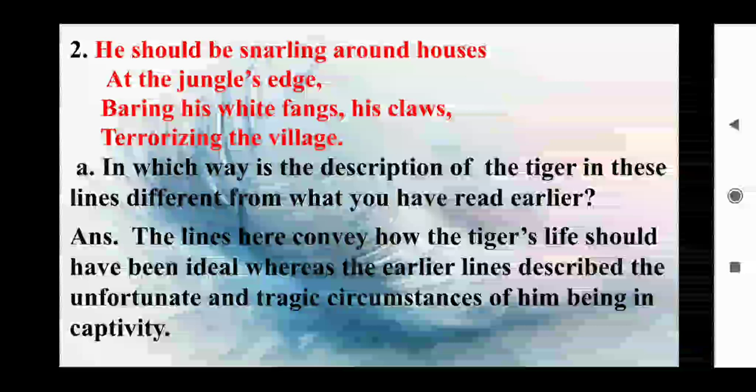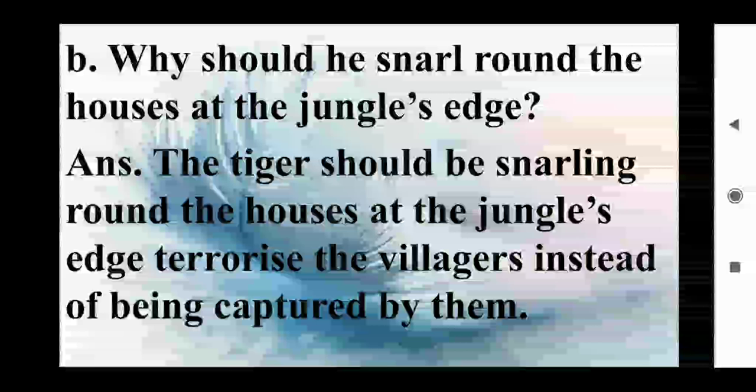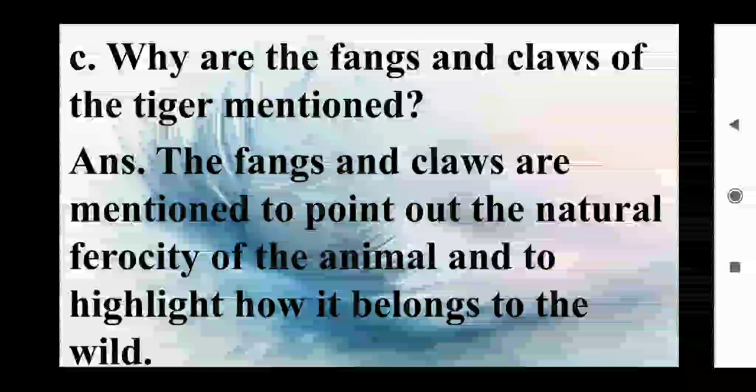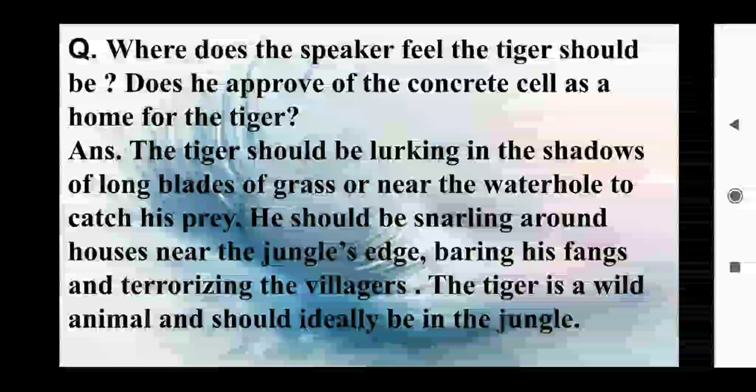Part (b): Why should he snarl round the houses at the jungle's edge? Answer: The tiger should be snarling round the houses at the jungle's edge to terrorize the villagers, instead of being captured by them. Part (c): Why are the fangs and claws of the tiger mentioned? Answer: The fangs and claws are mentioned to point out the natural ferocity of the animal and to highlight how it belongs to the wild.